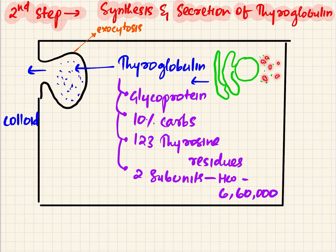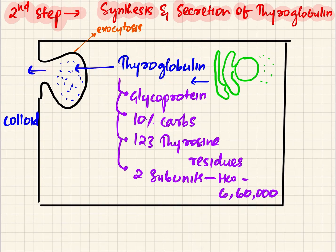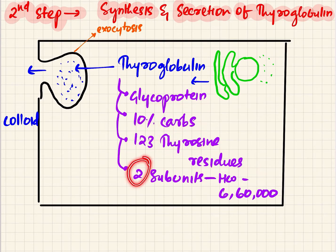Step 2 is synthesis and secretion of thyroglobulin. Ribosomes — the protein factories — synthesize thyroglobulin, which is then packed in the endoplasmic reticulum and released via exocytosis into the colloid. Thyroglobulin is a glycoprotein made up of 10% carbohydrates, 123 tyrosine residues, 2 subunits, and has a molecular weight of 660,000.